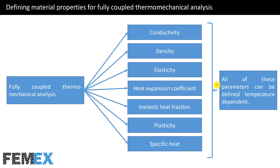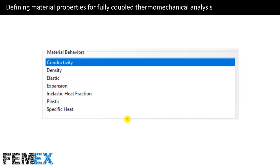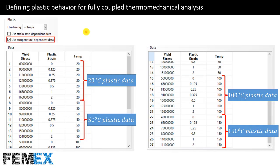All of these parameters can be defined as temperature-dependent. This is a picture from the material definition in the property module, where conductivity, density, elastic expansion, inelastic heat fraction, plastic, and specific heat are defined. Now, I want to talk about defining plastic behavior for fully coupled thermo-mechanical analysis. If you want to define temperature-dependent plastic data, you must activate 'use temperature-dependent data,' which adds a temperature column to the plastic data definition.